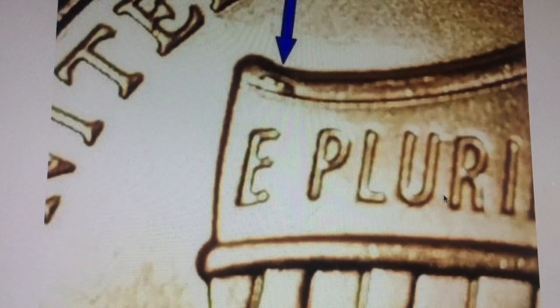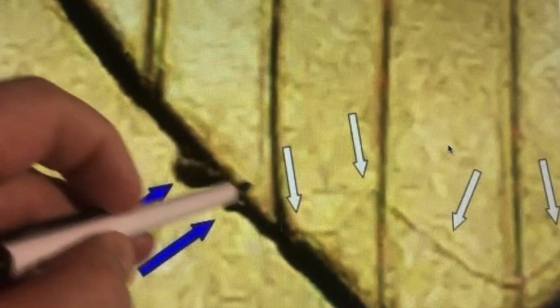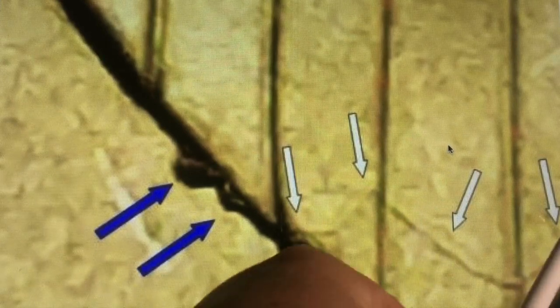Here's another example right here of a cud, a little extra metal hanging to the shield here. You'll also see right here a die crack.